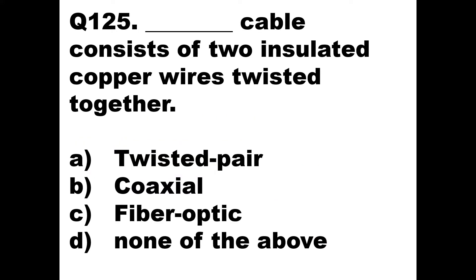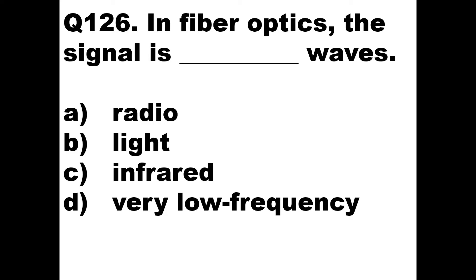Question 125: A dash cable consists of two insulated copper wires twisted together. The answer is in the description itself — two wires twisted together means it is a twisted pair. So answer A, twisted pair, is the correct one.